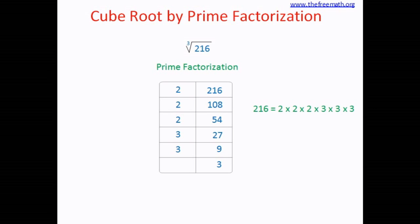We know that when we write down the prime factors of a square number, every prime factor appears twice in the factors. So in case of a cube number, each prime factor will appear three times in the factors. The definition of a cube number is that you multiply a number with the same number three times, which means the number appears three times in the product. So if you write down the factors of that number, every factor is going to be there three times because that's how the cube number is formed.